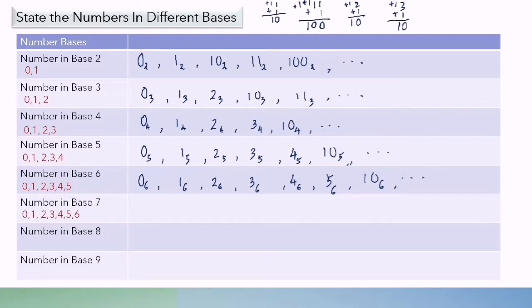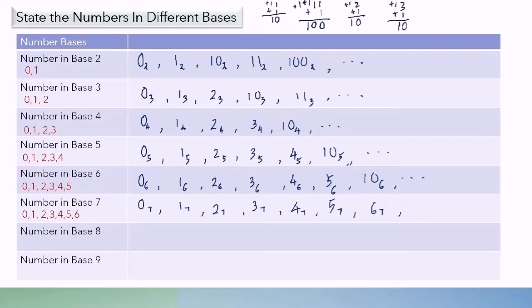Number in base 7: we have digits 0, 1, 2, 3, 4, 5, and 6. So we count from 0 up to 6 base 7. After that, we write 1, 0 base 7, and so on.